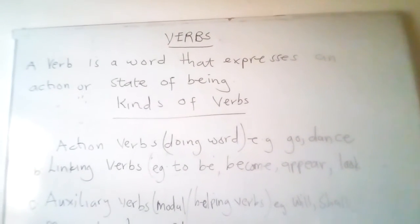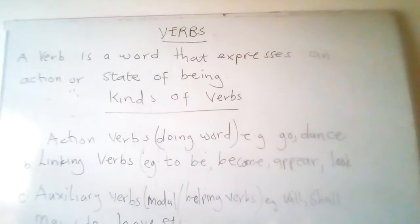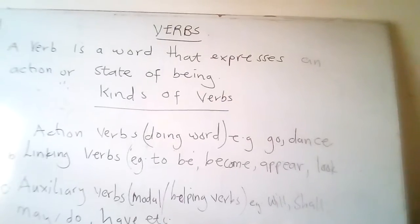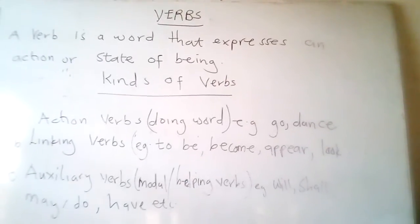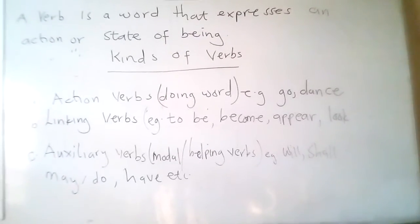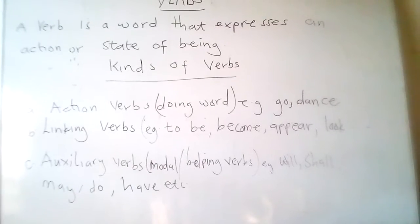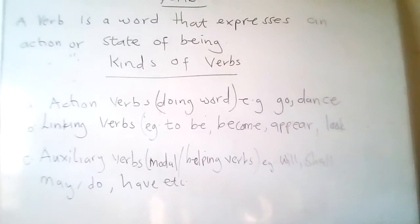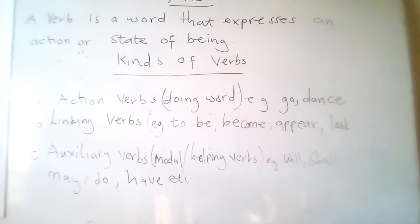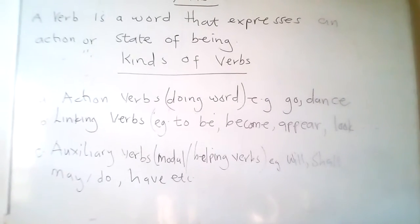This video is about verbs. A verb is a word that expresses an action or state of being. There are three kinds of verbs: action verbs, which are doing words — for example, 'go' and 'dance'; linking verbs — for example, 'to be', 'become', 'appear', 'look'; and auxiliary verbs, which are also called modal verbs or helping verbs.